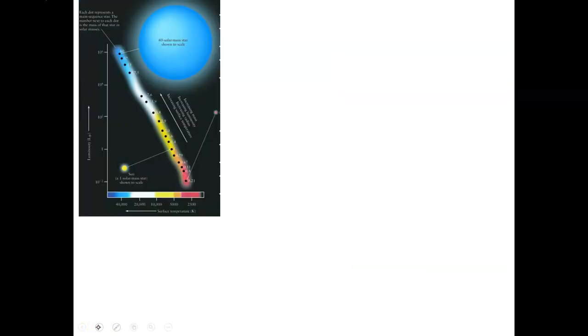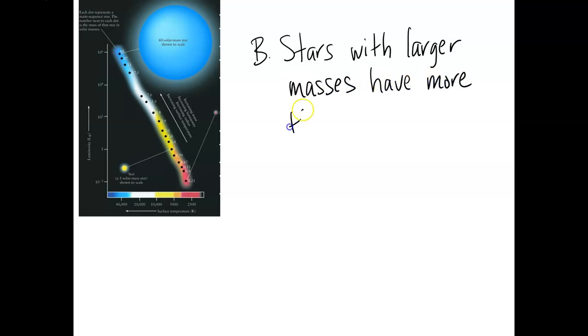On the other end, high mass stars are the big blue ones. We'll see how this all works with the HR diagram. And we're going to get to all of that eventually. But for now, we're just going to talk about in general, that stars with larger masses, high mass stars, have more hydrogen. I hope that makes sense for fusion.